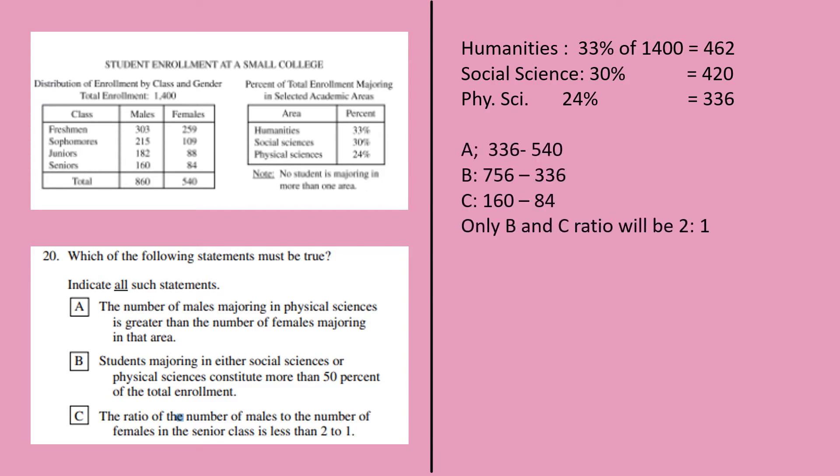If I'm taking statement A, the number of males majoring in physical science is 336, and the number of females majoring in that area is 540. So I don't get a result which is 2 to 1.